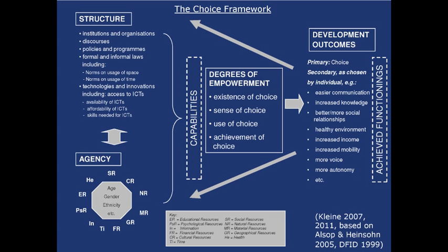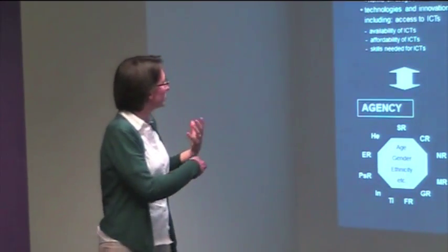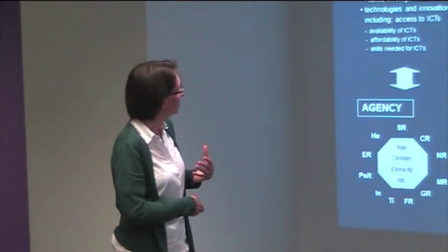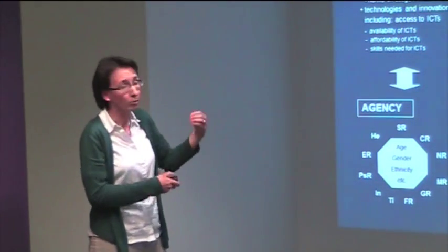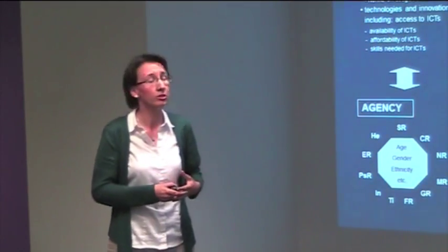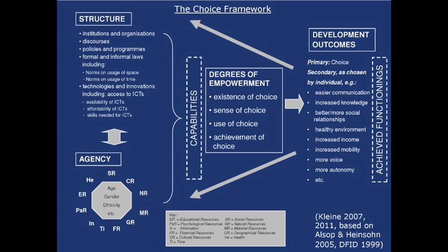So there's an interaction between the resources a person can draw on and the structural conditions they find themselves in, through which they navigate how much choice they have. Within the choice dimension, I work with Alsop and Heinzon's approach, looking at existence of choice, use of choice, and achievement of choice. Drawing on fieldwork, sense of choice emerged as an important additional dimension to include.